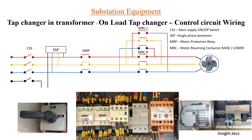In the previous video we already saw the power circuit of the tap changer. We saw these two contacts, MRCL and MRCR, for raising and lowering of the tap. We saw how this entire power circuit works, and this is the motor. To rotate this motor, these two contacts are main, and these contacts get the command from the control circuit.